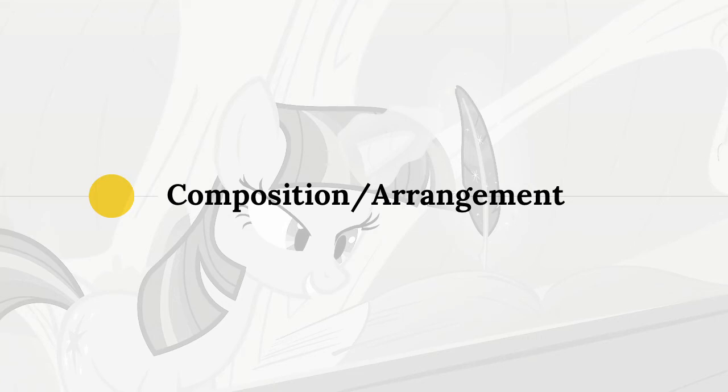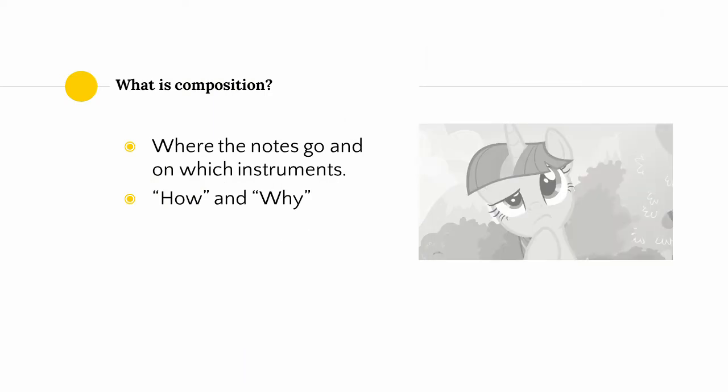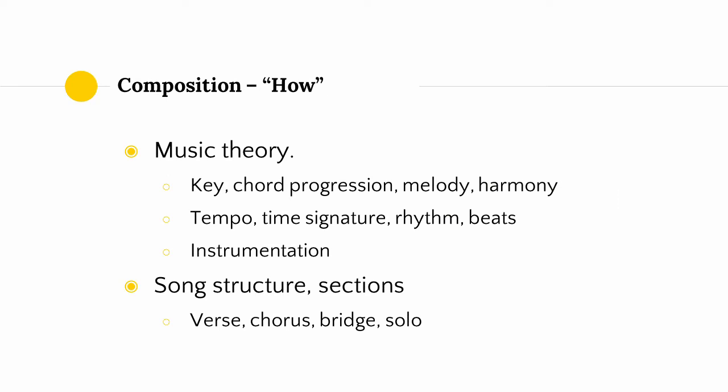It is 7am on a Monday and therefore it is time to briefly talk about composition and arrangement. The terms composition and arrangement are often used interchangeably. Practically, composition is simply deciding where the notes go and on which instruments. I consider composition to have two main parts: the how and the why. The how of composition is music theory — understanding keys and chord progressions, developing melodies and harmonies that work within those, developing rhythm and beats within tempos and time signatures, deciding on instrumentation, and deciding what structure your song should have: verses, choruses, refrains, bridges, solos, as well as classical forms such as the sonata.